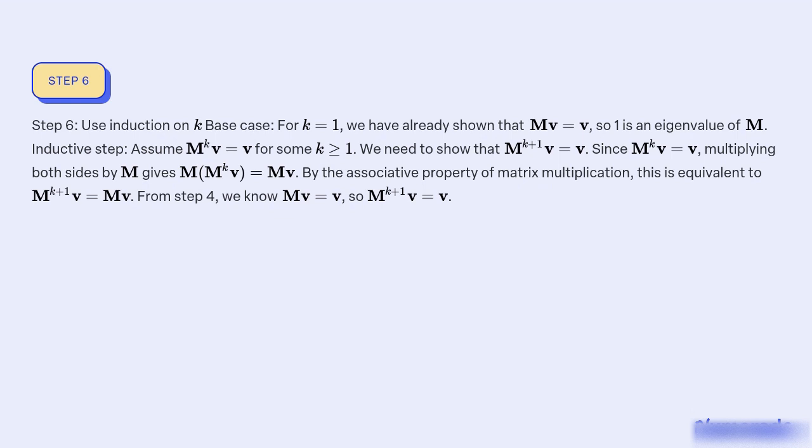Inductive step: Assume M^k v = v for some k ≥ 1. We need to show that M^(k+1) v = v. Since M^k v = v, multiplying both sides by M gives M(M^k v) = Mv. By the associative property of matrix multiplication, this is equivalent to M^(k+1) v = Mv. From step 4, we know Mv = v, so M^(k+1) v = v.